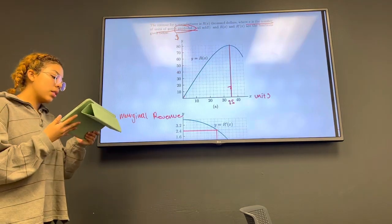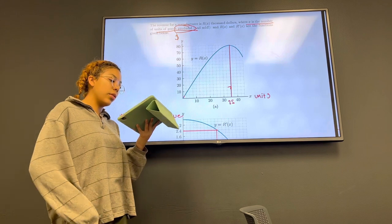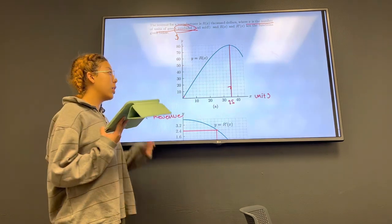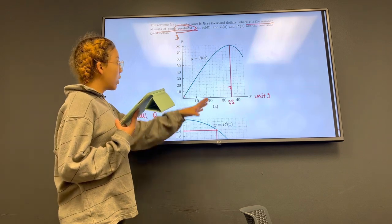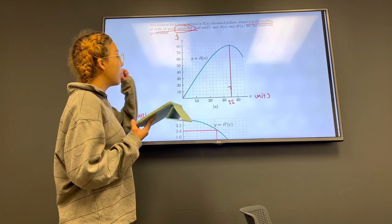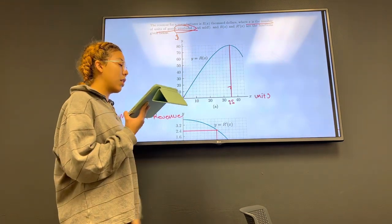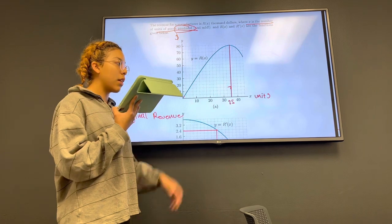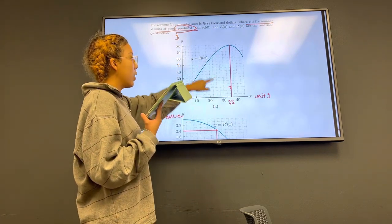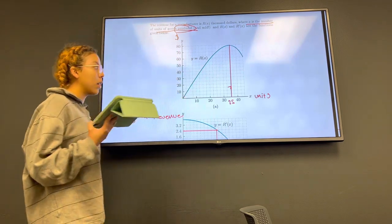The second question asks how would you use the graph to determine the revenue from producing x units of goods. For this graph R(x), if we wanted to determine the revenue from producing these units as on the x-axis, we would have to plug in an x value into R(x) to get the y value, which would be our thousands of dollars.